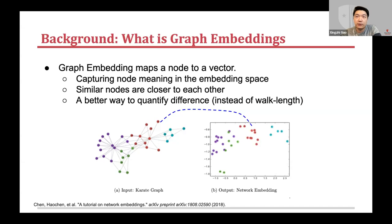In this example, you can see the nodes with the same color also cluster together on this 2D plane. And most importantly, by this low-dimension numerical embedding vector, we could apply existing machine learning algorithms for many downstream tasks — for example, node classification, node clustering for community discovery, or outlier detection.